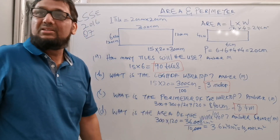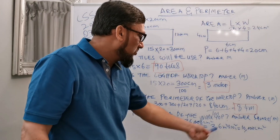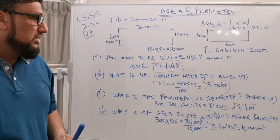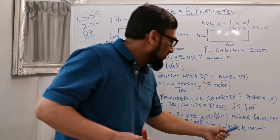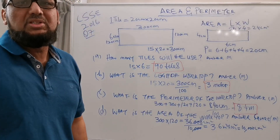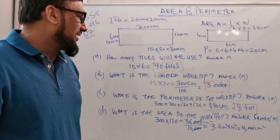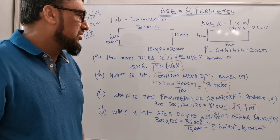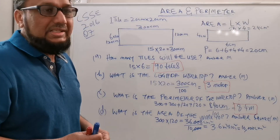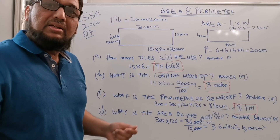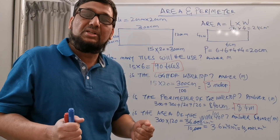For the area, 300 times 120 gives 36,000 square centimeters. Since 1 meter square equals 10,000 centimeters square, divide by 10,000 to get 3.6 square meters. If you like this video, please subscribe and see you in the next video. Bye-bye.